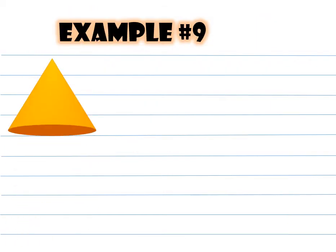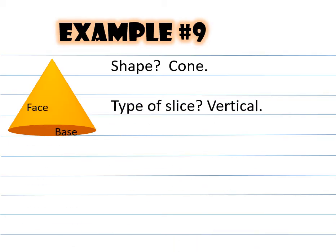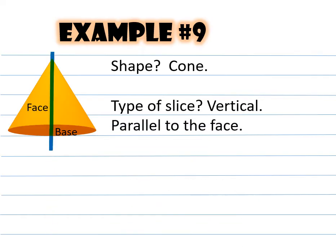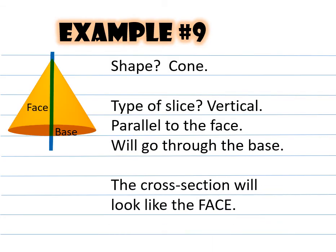Example number nine: we're almost done. This shape is called a cone — there's the face and a base underneath. The type of slice is vertical, going through the apex, parallel to the face and going through the base. The cross section will look like the face. The result is a triangle.